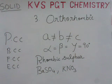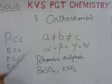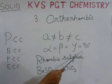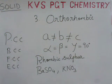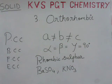The third type is orthorhombic. Here all three edges are different in measurement — a ≠ b ≠ c — but the bond angle is still 90 degrees. Examples are rhombic sulfur, barium sulfate, and potassium nitrate. All four types of variations are possible: primitive (PCC), body-centered (BCC), face-centered (FCC), and end-centered.